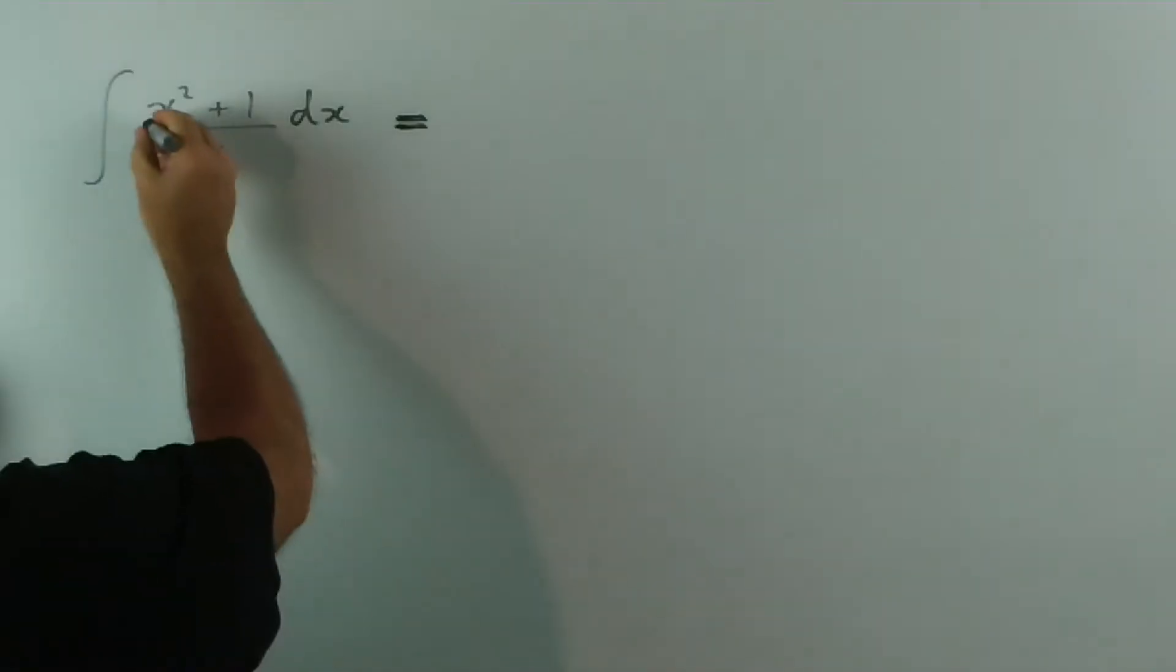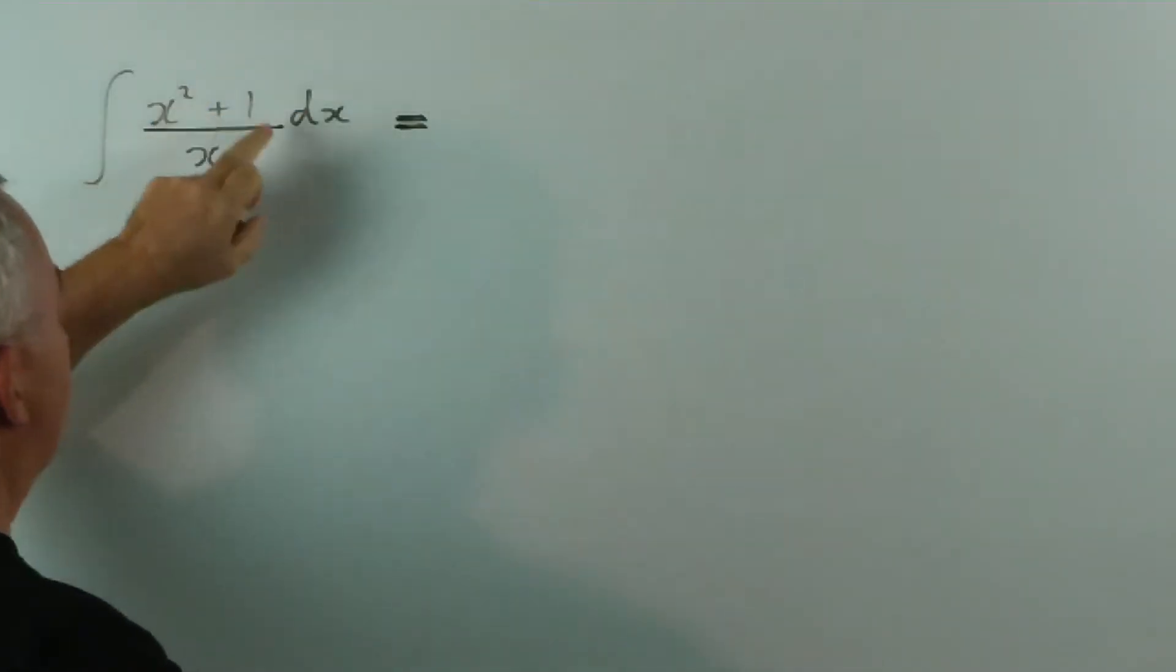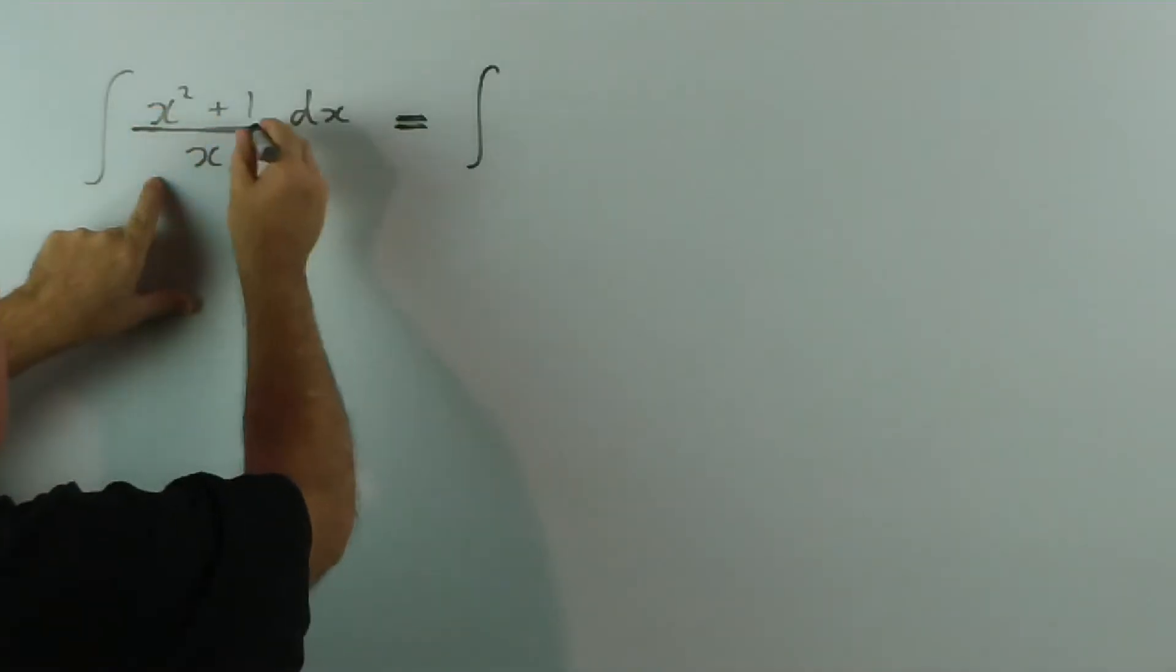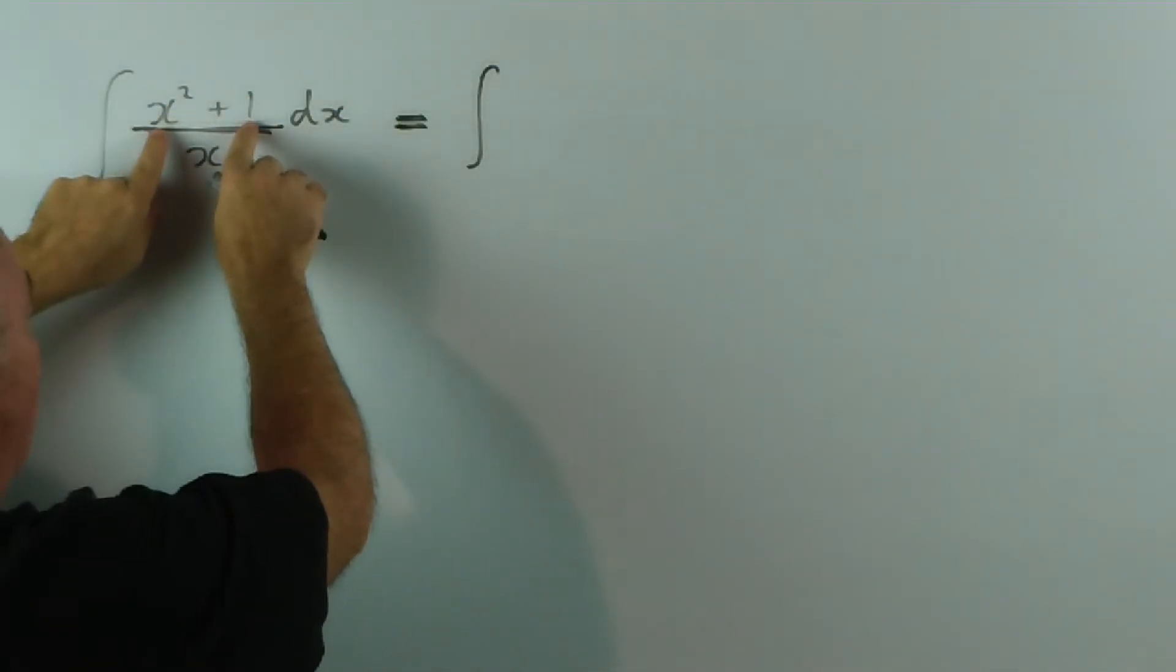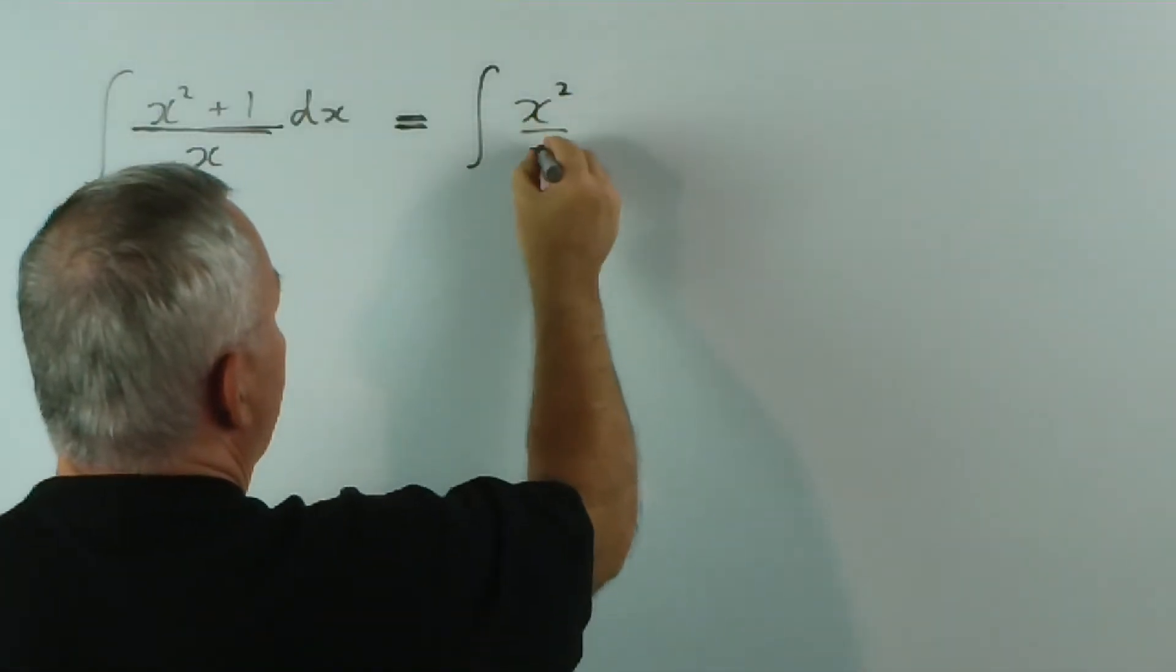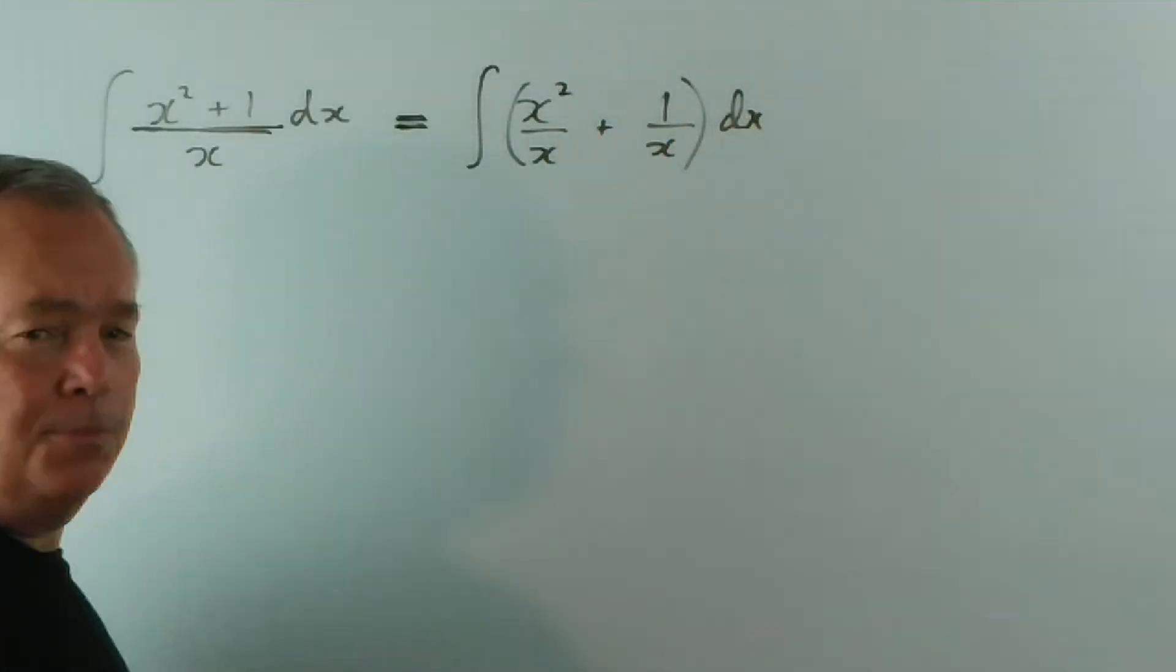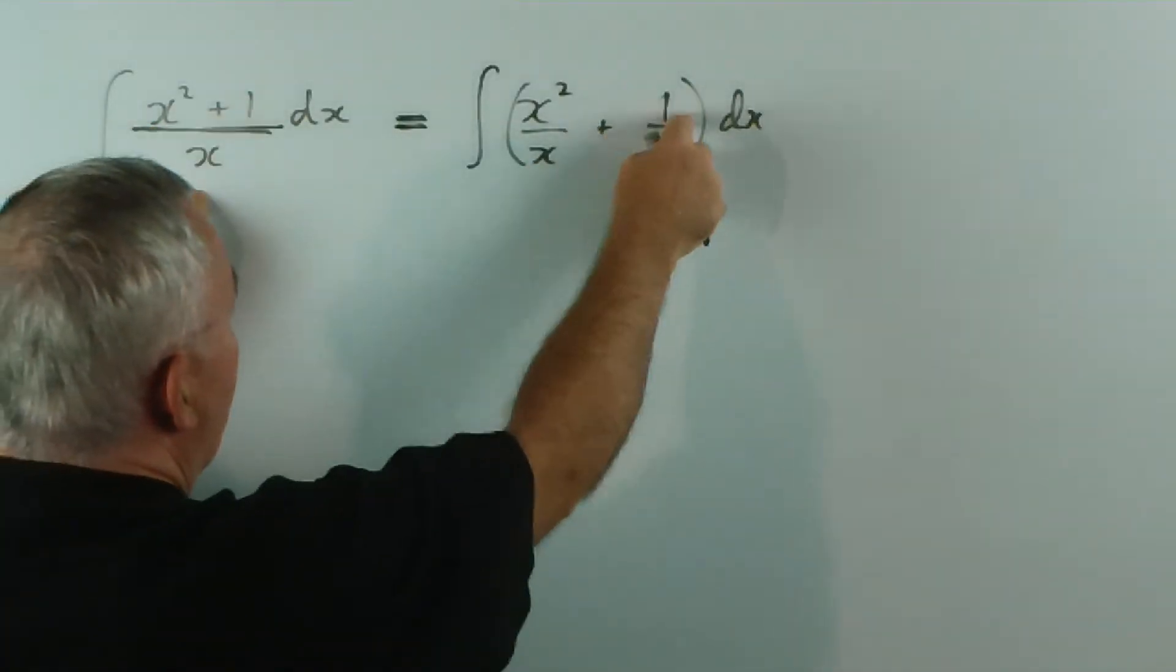So, our next option is to separate this fraction. Because this vinculum, or this bar, groups the top two terms together, and they're both divided by this, we can separate it like so. The x squared is divided by x, and the 1 is divided by x.